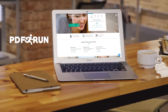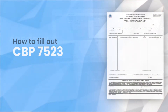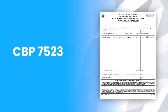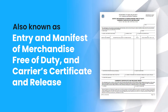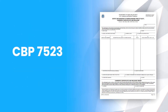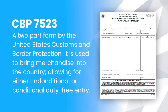Welcome to PDF Run. In this video, we'll guide you on how to fill out CBP 7523. Form CBP 7523, also known as Entry and Manifest of Merchandise Free of Duty and Carrier Certificate and Release, is a two-part form by the United States Customs and Border Protection.